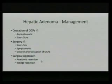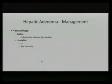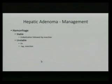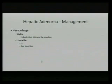The surgical approach is anatomic versus wedge resection — the key is to obtain a negative margin. If there is hemorrhage or rupture of a hepatic adenoma, the first line of treatment in a stable patient is embolization. Once embolized and hemorrhage is controlled, proceed with resection during the same hospital admission. If the patient presents in shock, immediately proceed to the OR for surgical resection.